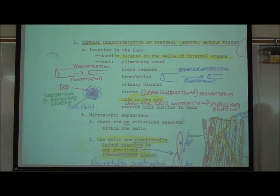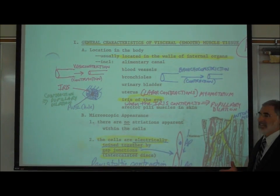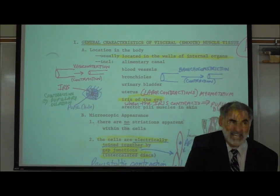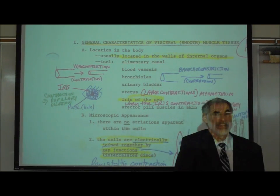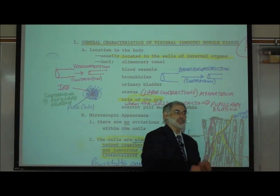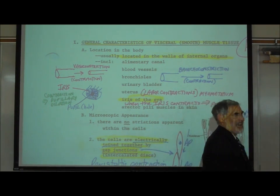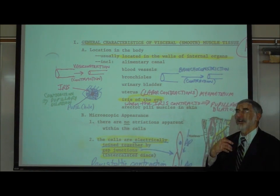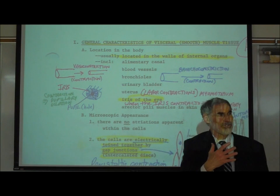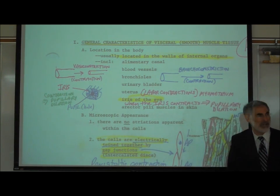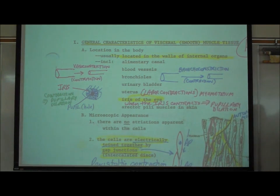An example of this is the problem in bronchial asthma. In people with bronchial asthma, their airways constrict, and the kind of medication they inhale are drugs called bronchodilators that dilate those airways to widen them and improve airflow.